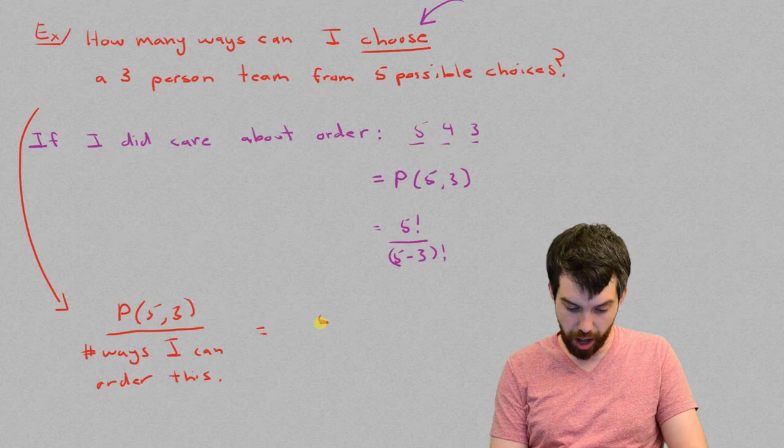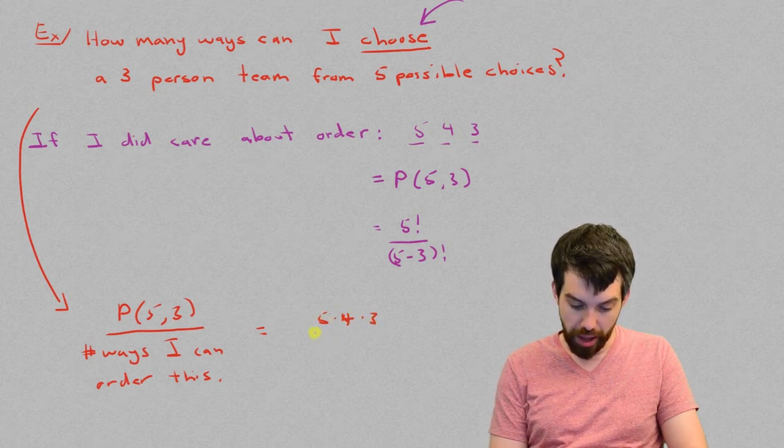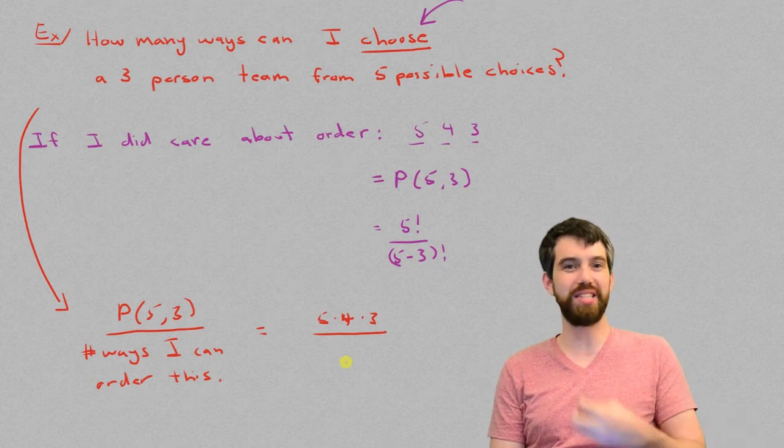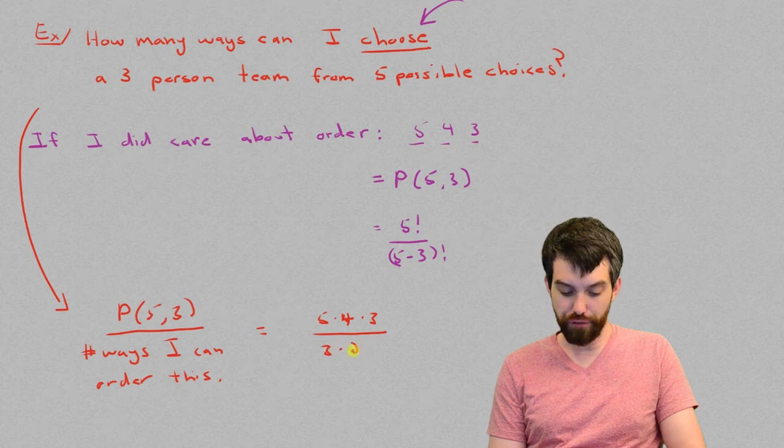Five times four times three on the top, it divides out by the number of ways that I could reorder those three things, three for the first option, two for the second option, and one for the third.